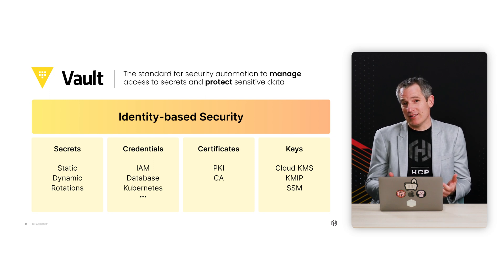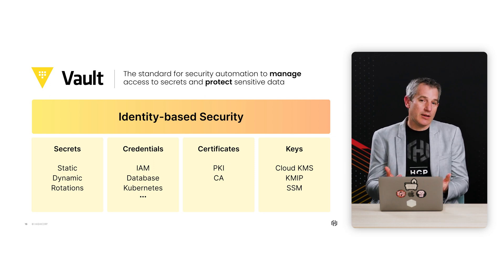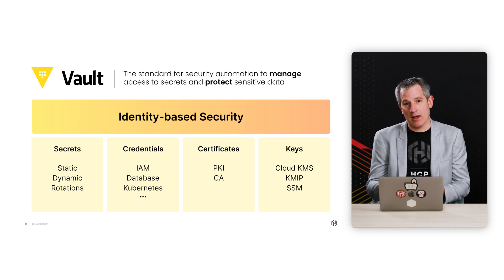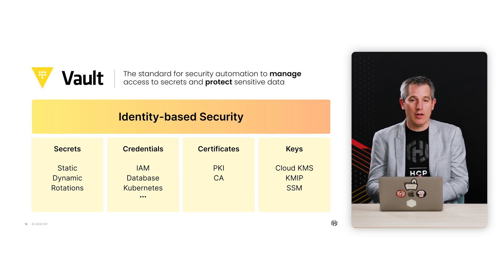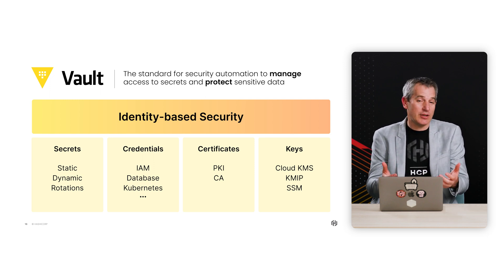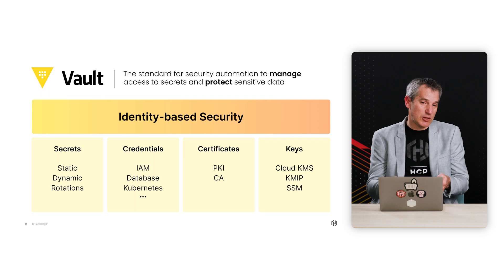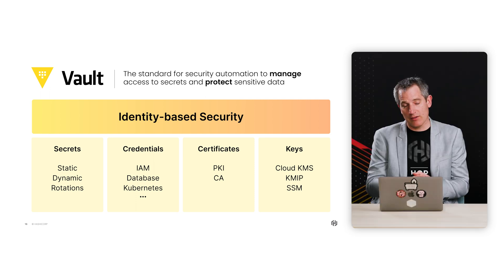A lot of people don't realize that identity-based security is at the foundation for how we make Vault's capabilities available. You can bring your identity to Vault if you're a system or an app — that could be a Kubernetes service account, an AWS IAM or GCP IAM profile, or an Azure Active Directory identity. We take that identity and translate it into a universal identity, which then allows us to determine which capabilities in Vault you have access to. We support secrets management, which is what we're known for, and a lot of people use that for static secrets — we'll store the secret and only the right people have access to it.